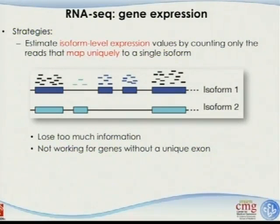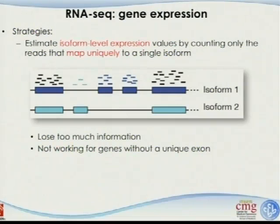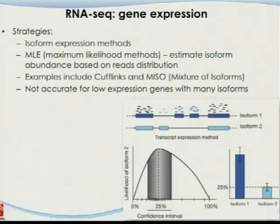The problem with this approach is that it loses too much information. Alternative splicing occurs frequently, but the alternative exons are still only a small part of the gene, so we are not using the whole information. It also doesn't work for genes without a unique exon. There's one gene in Drosophila with over 30,000 isoforms — bigger than the entire human genome — so that situation is impossible. Many genes commonly have more than three or four different isoforms, making reallocation really tricky.